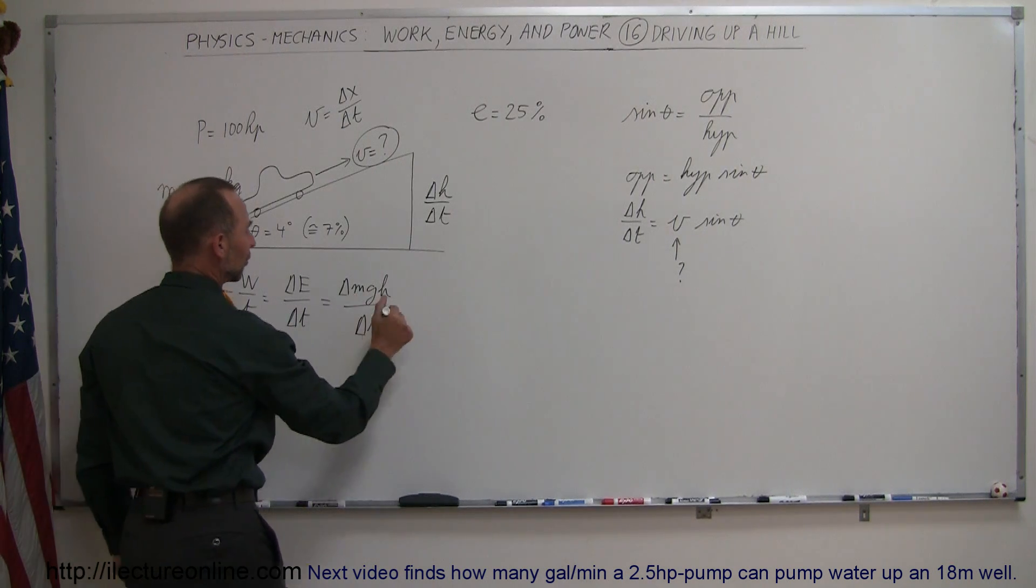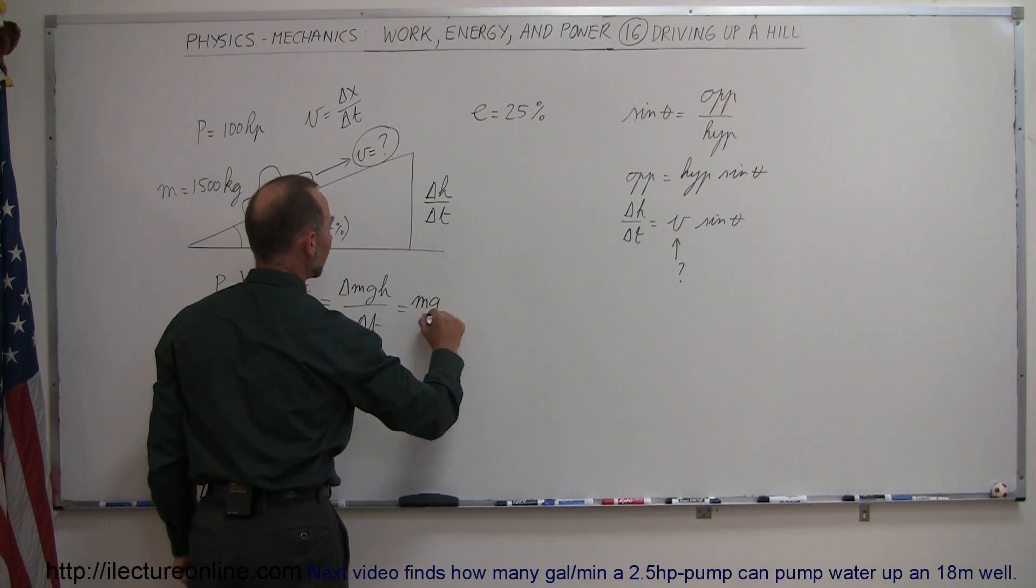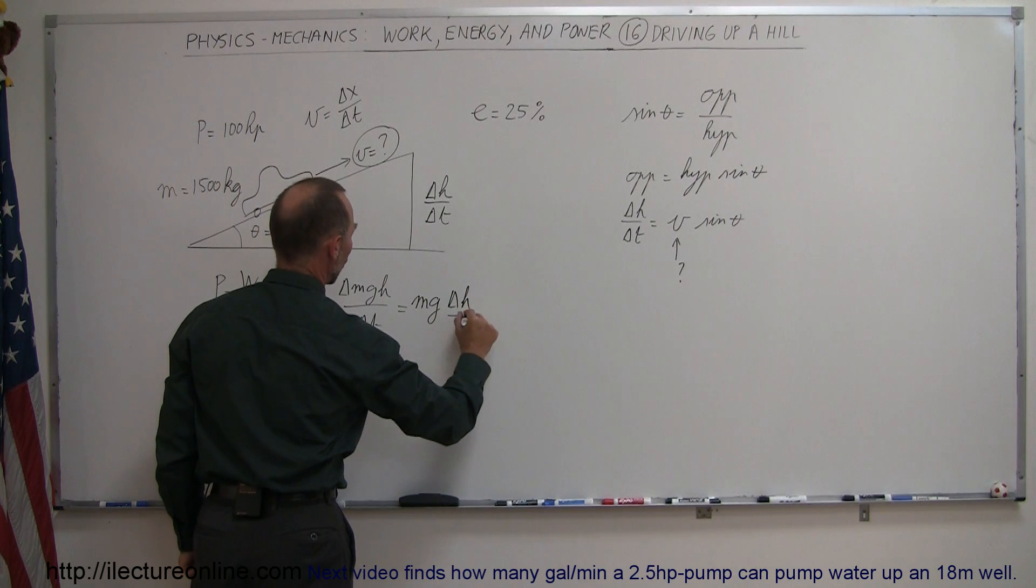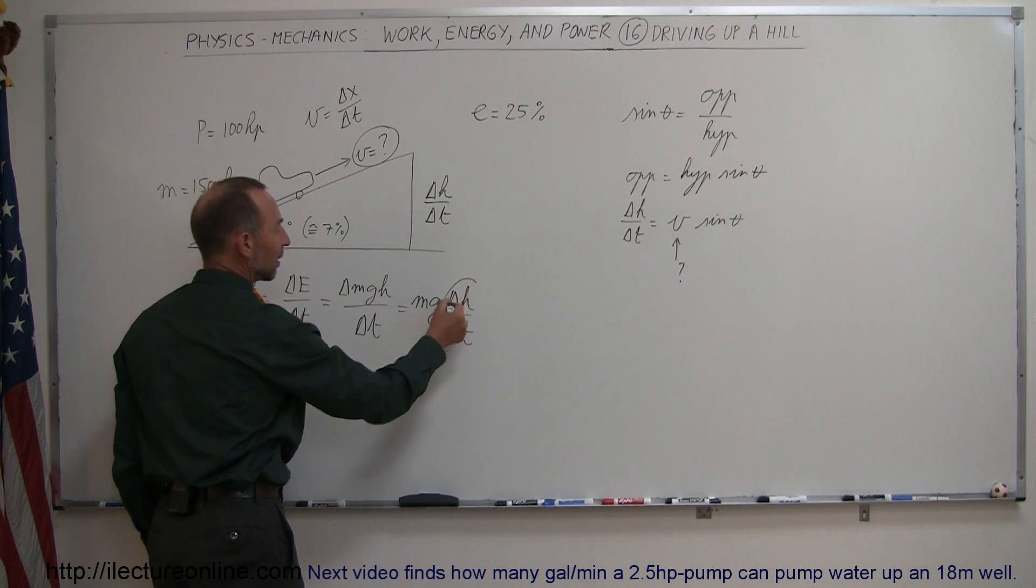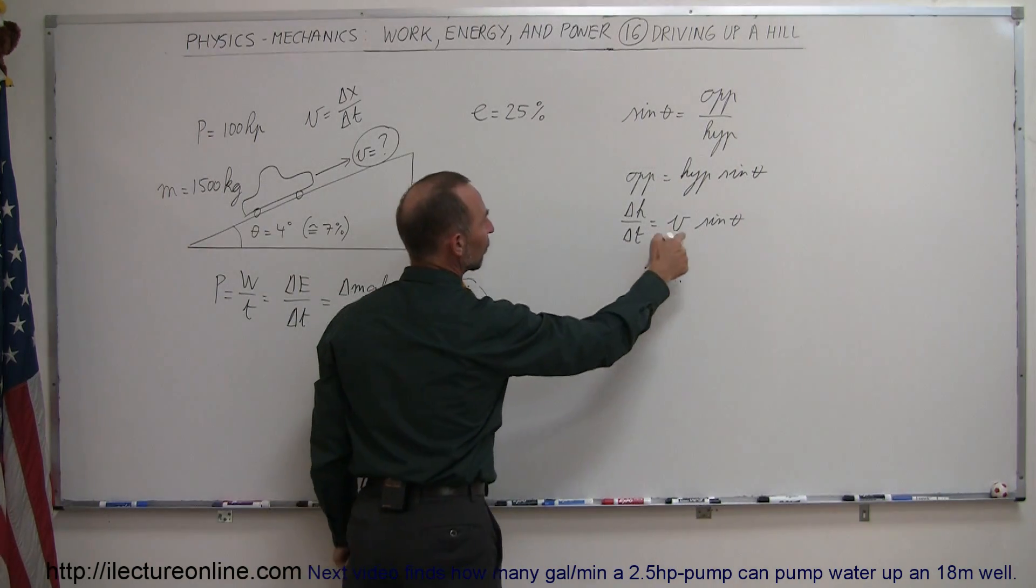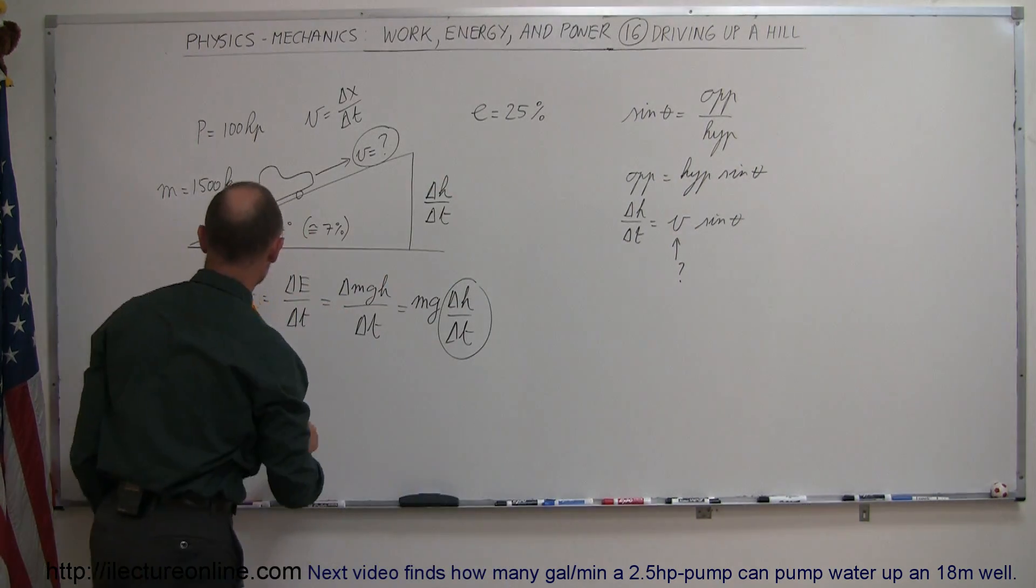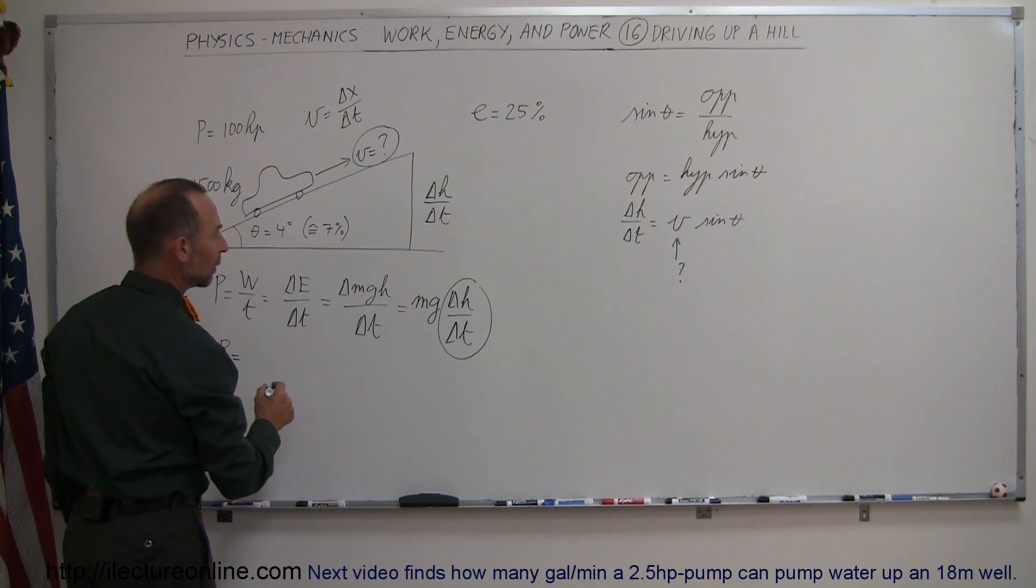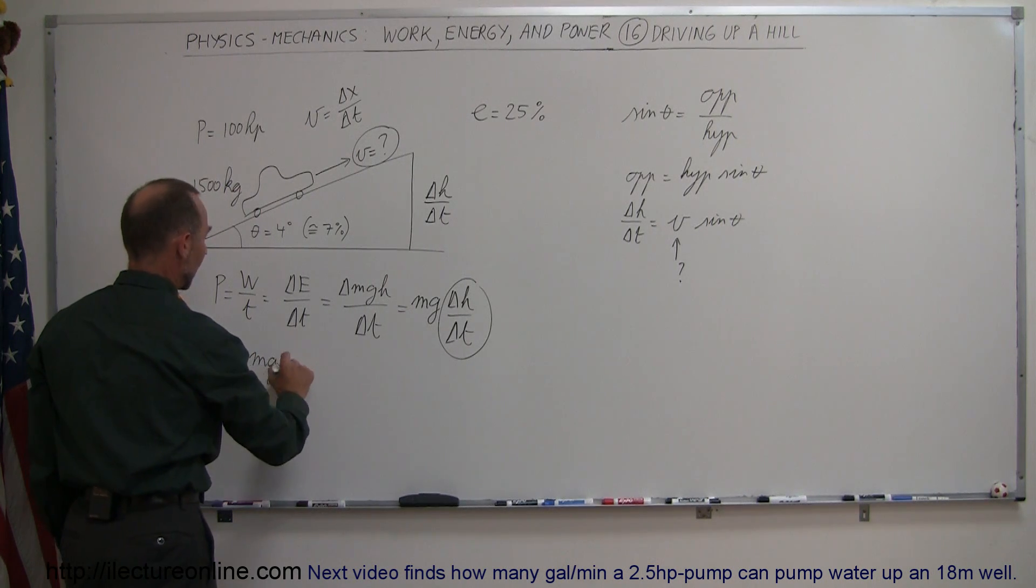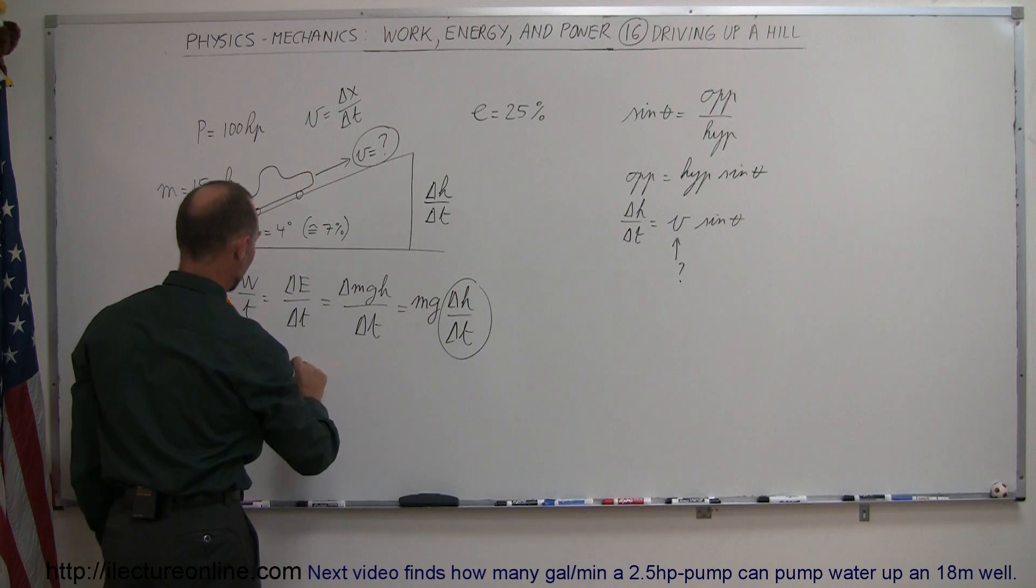Since MGH is a constant, we can move that out, so we can write this as MGH times the change in H over the change in time. And then we realize that this here is equal to V sine theta, which means that the power required to drive at the hill is going to be equal to MGH, and instead of delta H delta T, we write V sine theta.